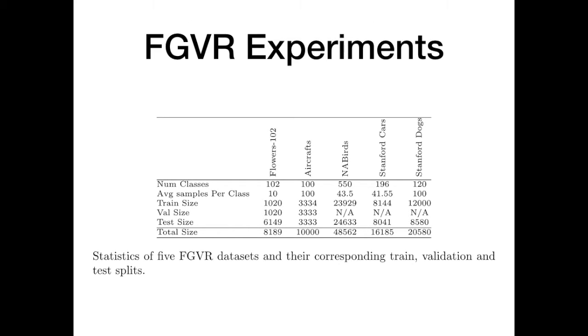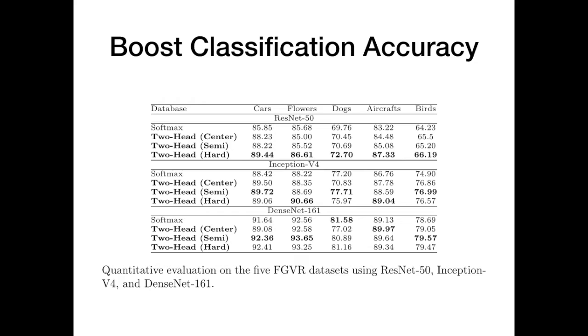Next, we evaluate our proposal using five fine-grained visual recognition datasets: the Flower 102, NA Beards, Stanford Aircrafts, Cars, and Dogs. These datasets are challenging in terms of large intra-class and small inter-class variations. Our proposal boosts classification performance across the five datasets on three different architectures: ResNet, InceptionNet, and DenseNet.